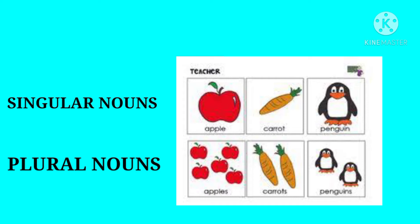Singular noun: if there is only one person, place, animal, or thing, then the noun is called a singular noun. For example, Carrot and Penguin. Plural noun: if there are more than one person, place, animal, or thing, the noun is called a plural noun. For example, Apples, Carrots, and Penguins.